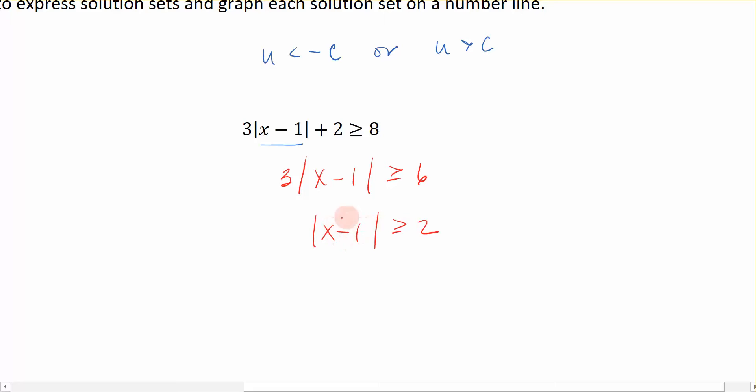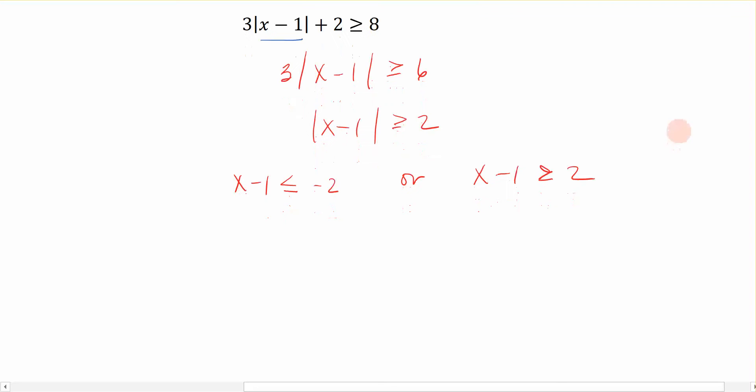Here is where we have the absolute value greater than the constant, and we can now put it in its formula that we have up here. So we have the absolute value portion less than or equal to negative 2, or the absolute value portion greater than or equal to 2. And those are the two equations we're going to solve.